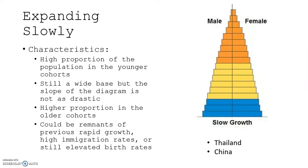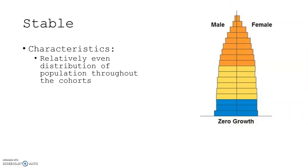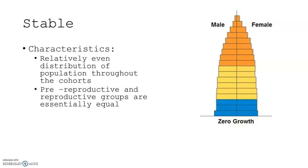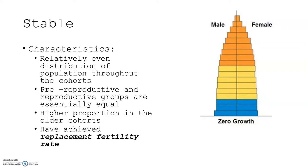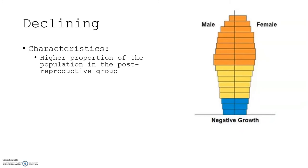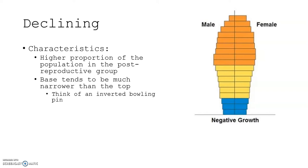Stable populations are characterized by a relatively even distribution of population throughout the cohorts, with pre-reproductive and reproductive groups essentially equal and a higher proportion in the older cohorts — having achieved replacement fertility rate. Declining populations have a higher proportion in the post-reproductive group, with a base much narrower than the top — like an inverted bowling pin. Not enough people are being born to replace those leaving the population, which creates a whole new set of challenges.